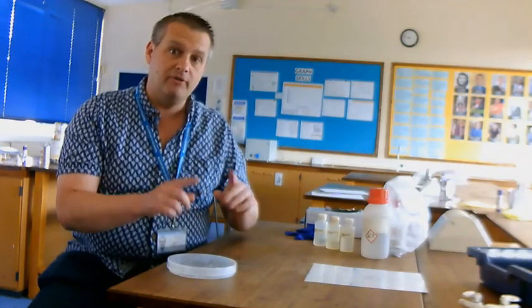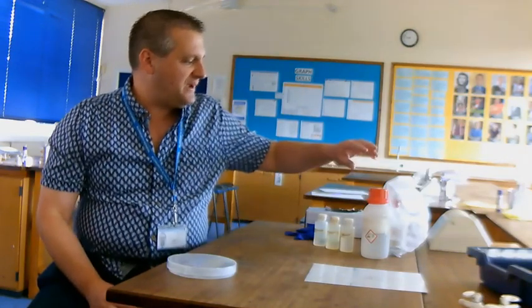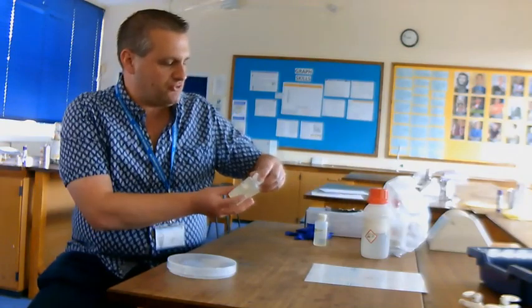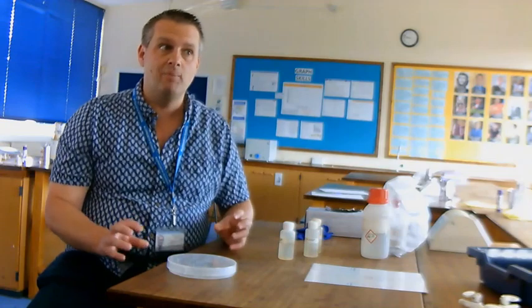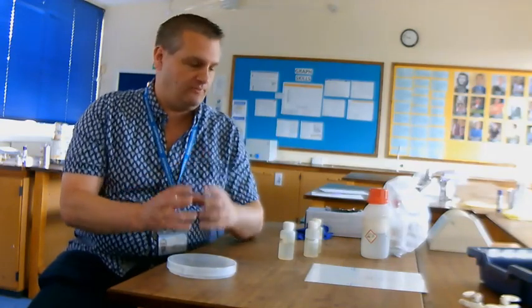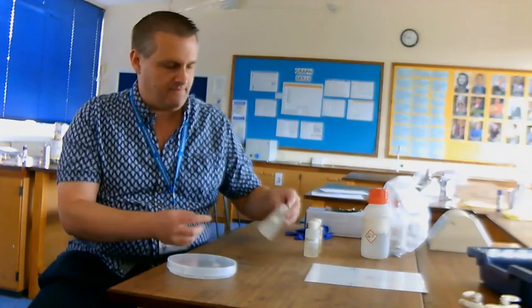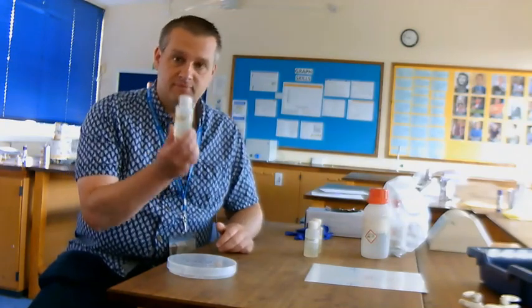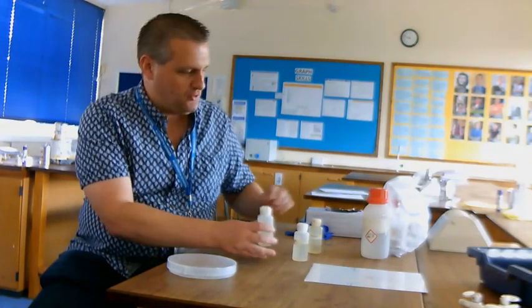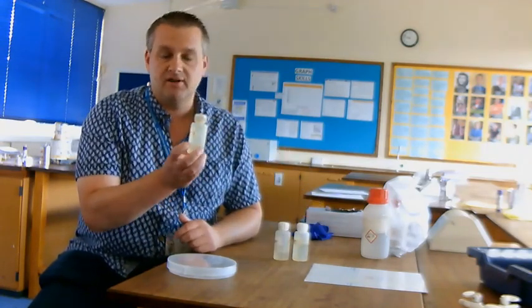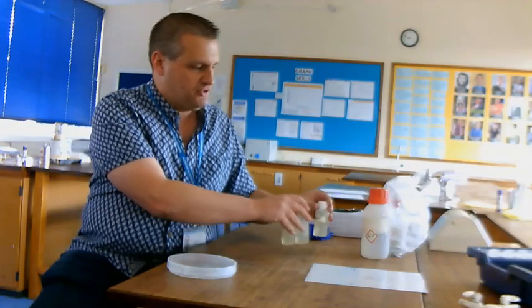In this reaction that we're going to do, we have three salt solutions. A salt is a chemical made of two different ions, an ionic compound. You've got a positive ion which is normally a metal and a non-metal ion, and those are stuck together to make one chemical. If you're in solution, it's dissolved in water. So we've got sodium bromide, so sodium stuck to bromine; sodium chloride, sodium stuck to chlorine; and sodium iodide, which is sodium stuck to iodine. Those are my three solutions.